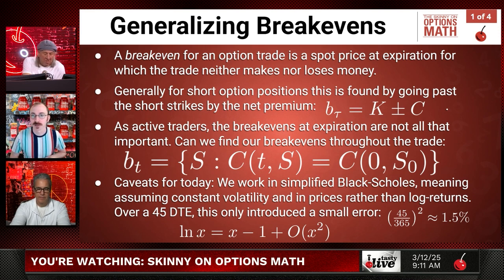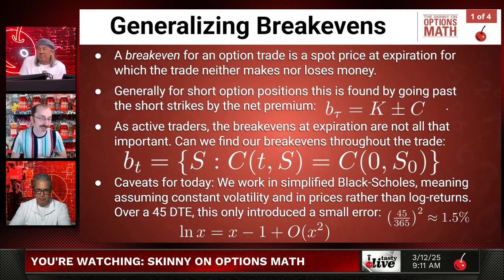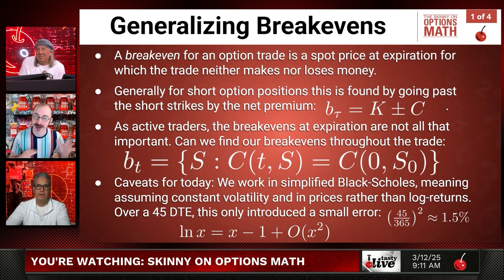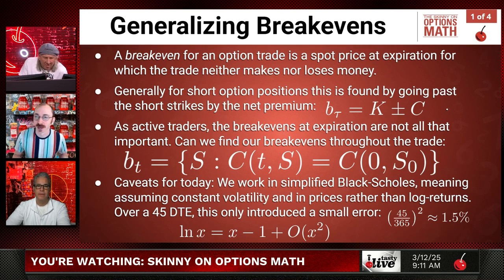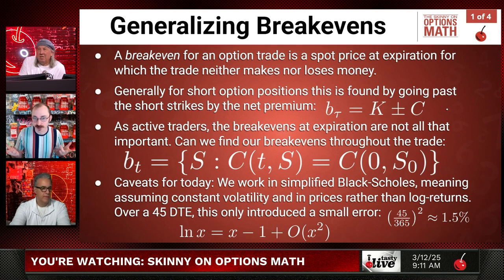There are a couple of caveats I'm making today to simplify things. One, we're working strictly on Black-Scholes — we're not going to worry about volatility changing. This is a ceteris paribus, all-else-being-equal calculation. We're not going to handle dynamic volatility. The other thing is that I'm going to work in prices rather than log returns, even though the Black-Scholes model says it's log returns that are normally distributed or modeled by Brownian motions.